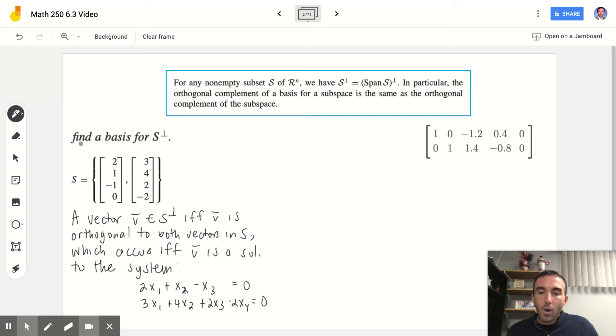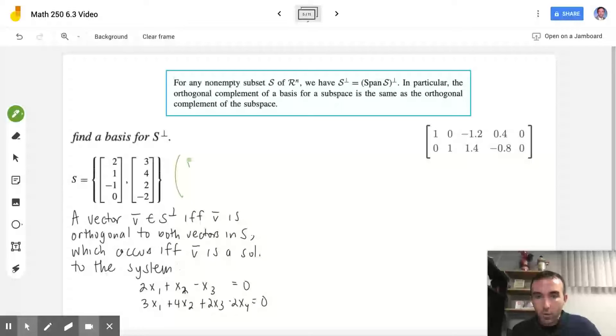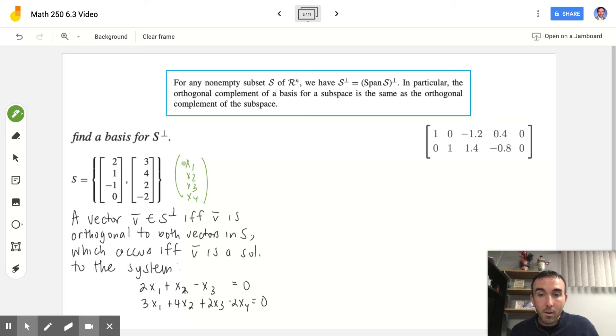And that occurs if and only if v is a solution to the system 2x1 plus x2 minus x3. Where I got this from was that we're looking for some vector x1, x2, x3, x4, so that when I find dot products of this vector with each of the other vectors, the dot product is zero. So in this case, I have 2x1, 1x2, negative 1x3, no x4. The sum of all of that should be zero. So that's why I set it up this way.